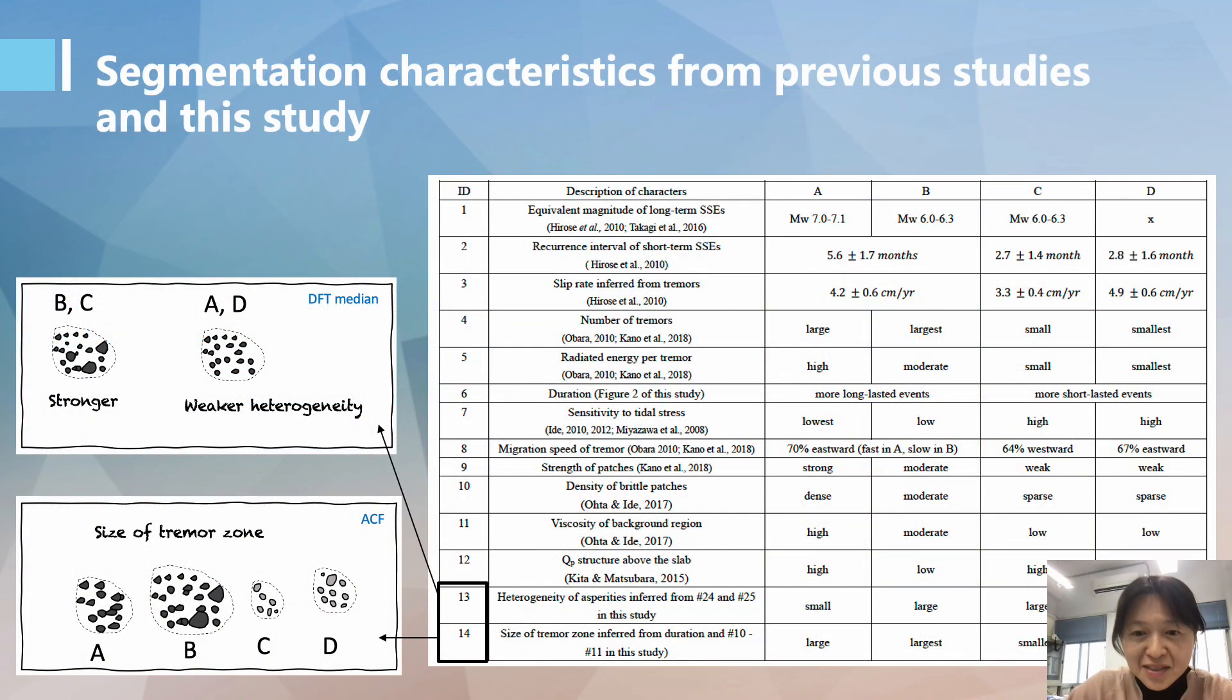And that leads to this table, which we summarized the previously published segmentation characteristics and the lessons learned from the three seismic features by this study. We interpret the seismic features extracted from machine learning approach to be associated with the different heterogeneities of asperities and the size of tremor zone.